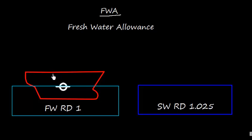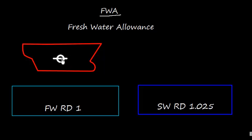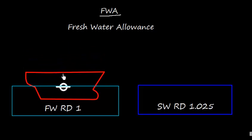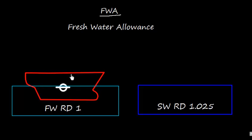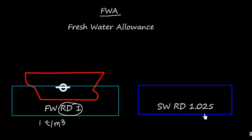Suppose the vessel is at the required permissible load line and it is floating in fresh water. If we shift this vessel into salt water, let us also discuss about the densities. The fresh water relative density is 1, which simply means that the density of fresh water is 1 ton per cubic meter. Similarly, the relative density of salt water is 1.025, which means the density of salt water is 1.025 ton per cubic meter.